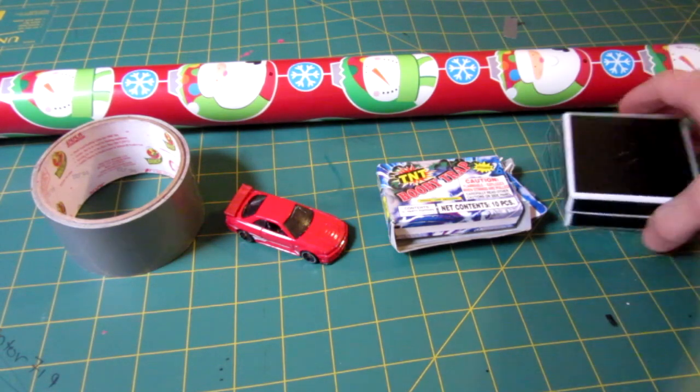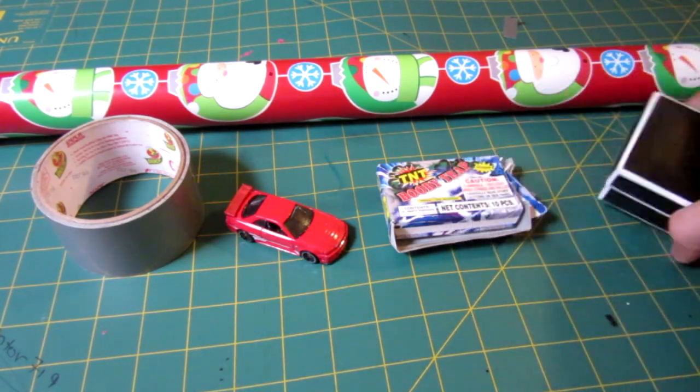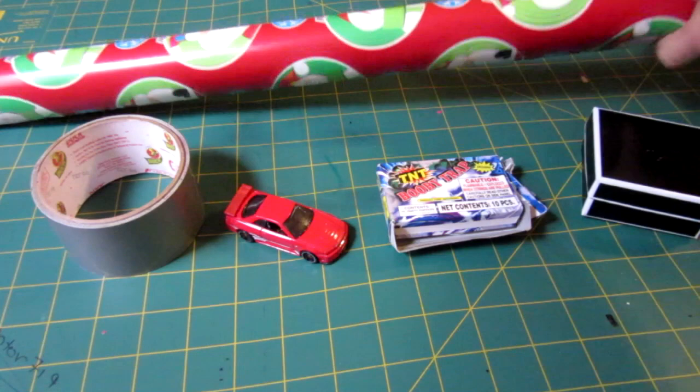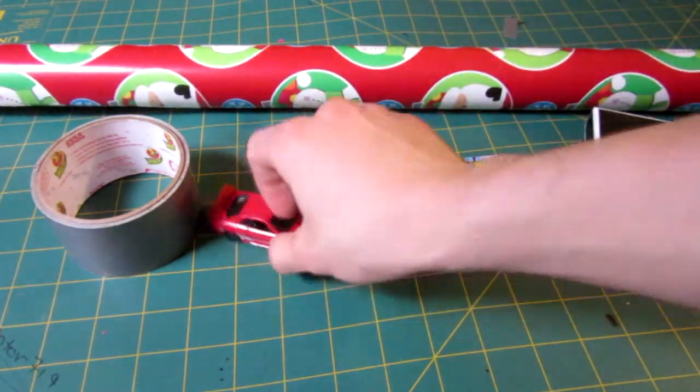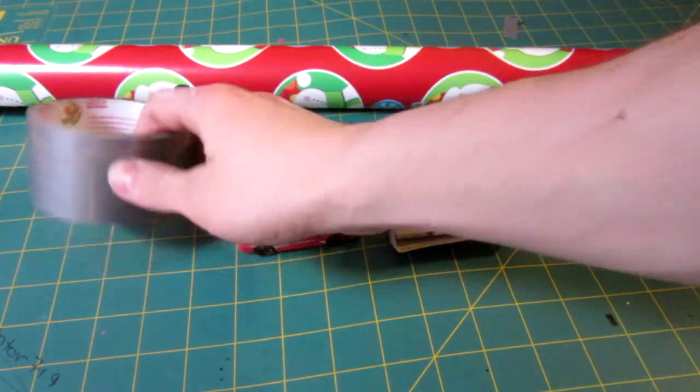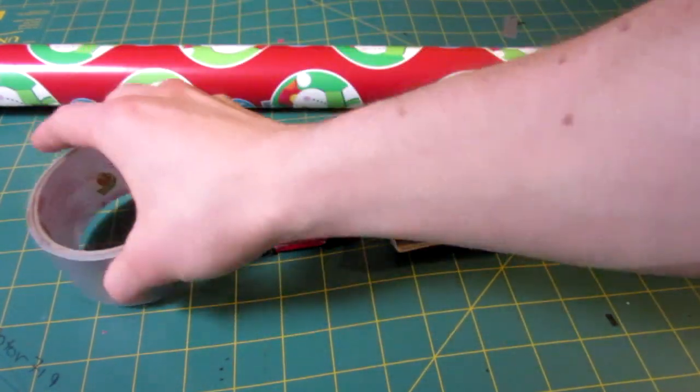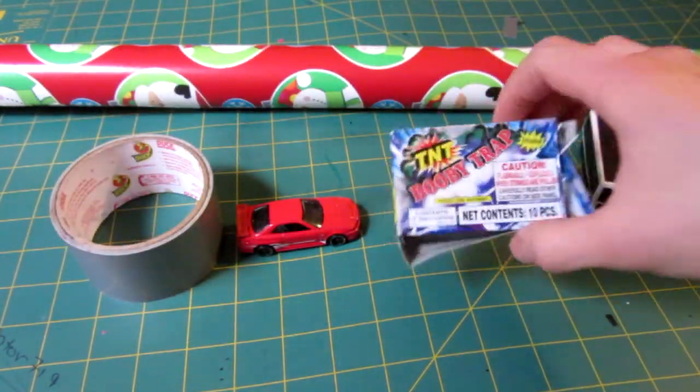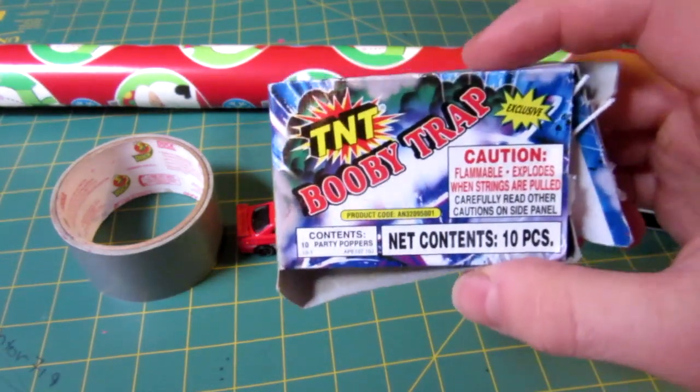What you'll need for this video: you'll need a box, wrapping paper for that box, your present of course that fits nicely in your box, some good tape like duct tape, and the key is these TNT booby traps.